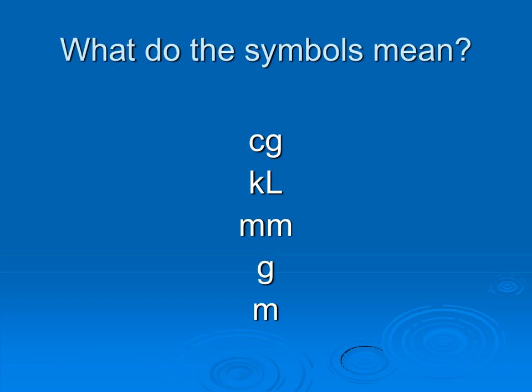What I would like you to do now is pause the video and write down what these symbols mean. Now that you've had time to try these out on your own, let's take a look at the answers. So when you see CG, that is going to be a centigram. KL is going to be a kiloliter, similar to like kilometers of 1,000 meters. Kiloliter would just be 1,000 liters. MM is millimeter. Regular M is meter. And G is going to be gram.